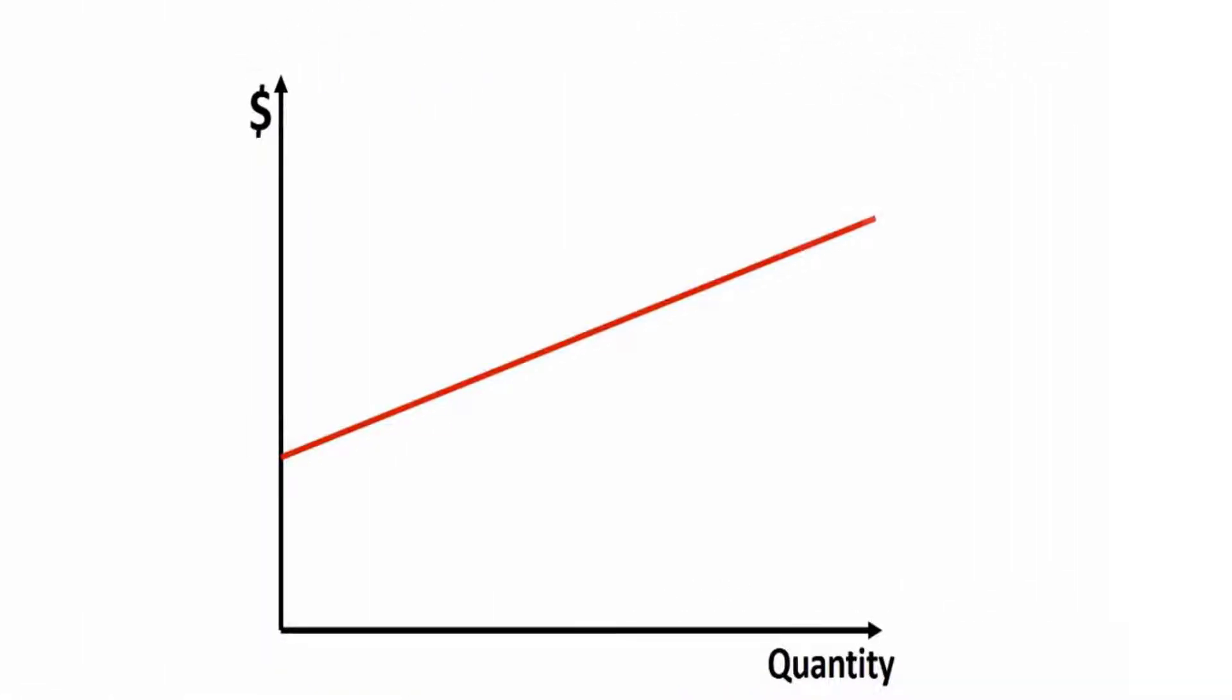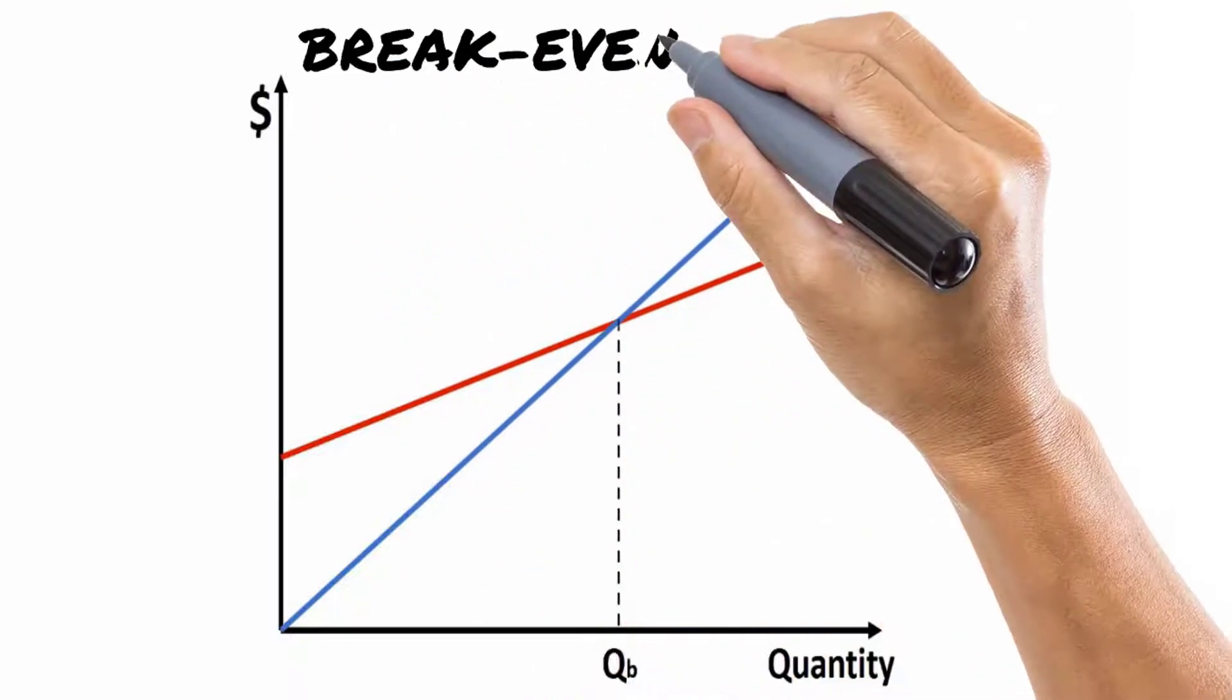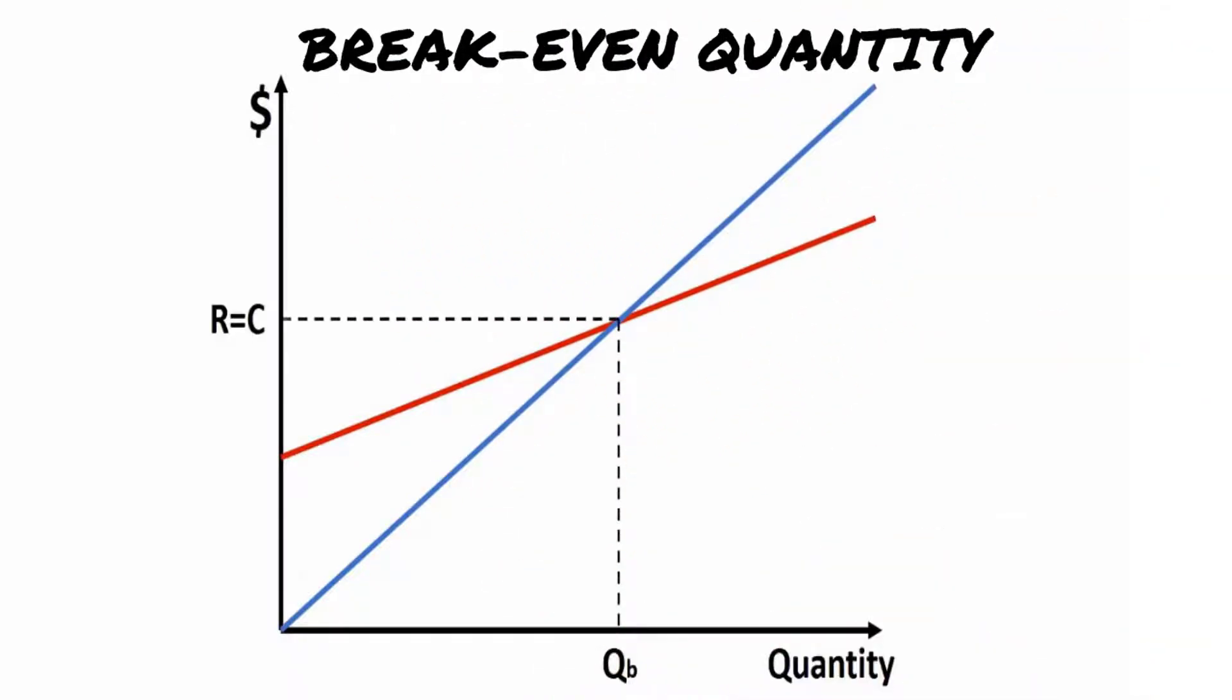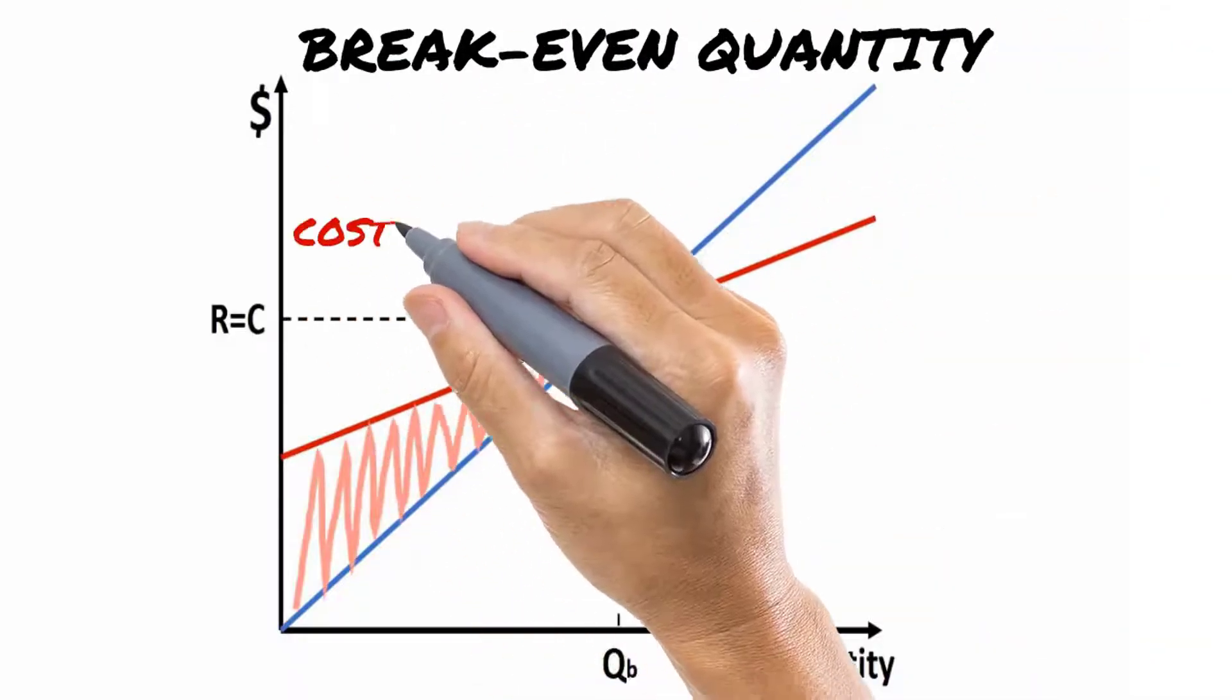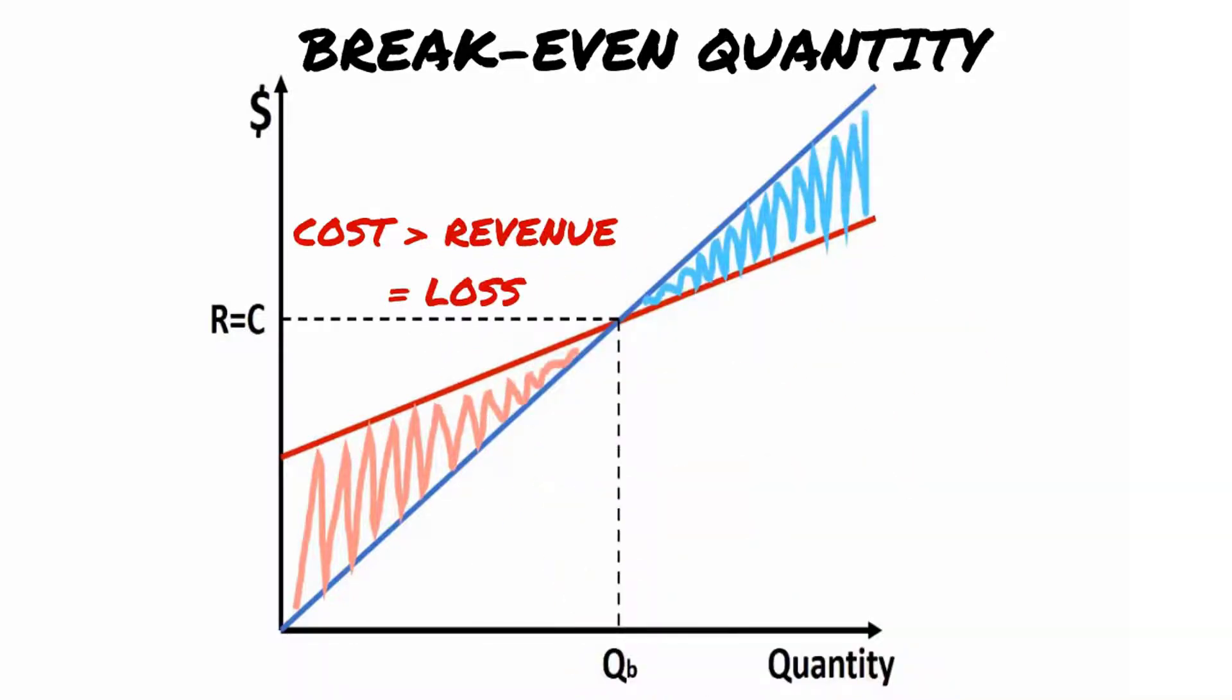We can have a good visualization of the break-even analysis when cost and revenue lines are represented in the same graph. When the total cost is higher than the revenue, the red line is above the blue line. It means that the company is losing money.